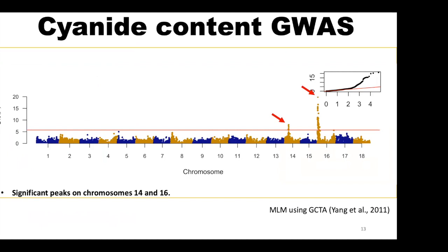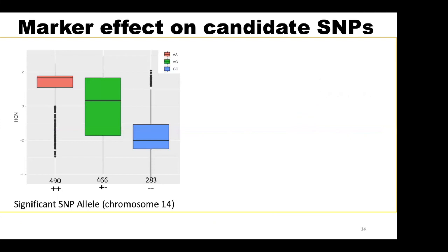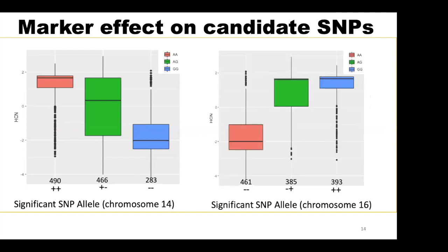We performed GWAS and found two peaks: one on chromosome 14 and one on chromosome 16, which explain the variance we see in our dataset. It is safe to say that HCN in this dataset is regulated in an oligogenic manner. Looking at the marker effect of our candidate SNPs for both chromosomes, chromosome 14 shows an additive response while chromosome 16 shows a dominance response.